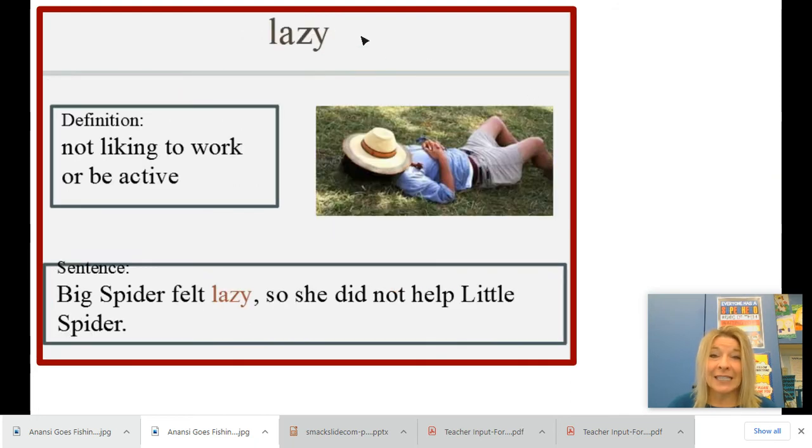The next word is lazy. Can you say that? I see the Y on the end making the long E sound. We've learned that in foundations. Lazy. And lazy is the antonym of being energetic or full of energy. This is the opposite, the antonym. And this is an adjective. This describes how somebody or something is. And a definition of being lazy is not liking to work or be active.